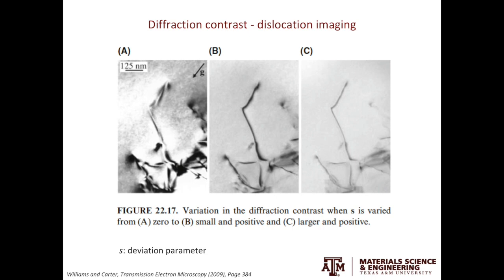To wrap up, there are three types of contrast in TEM: mass thickness contrast, diffraction contrast, and phase contrast. Both mass thickness contrast and diffraction contrast are also called amplitude contrast. In the next video, we'll introduce phase contrast and discuss what information we can obtain from it.